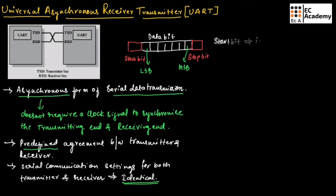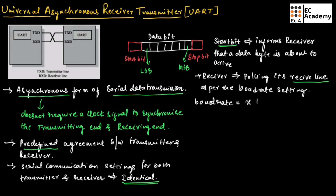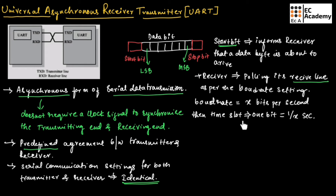The start bit informs the receiver that a data byte is about to arrive, and the receiver starts polling its receive line as per the baud rate setting. If the baud rate is x bits per second, then the time slot available for 1 bit will be equal to 1 divided by x seconds.